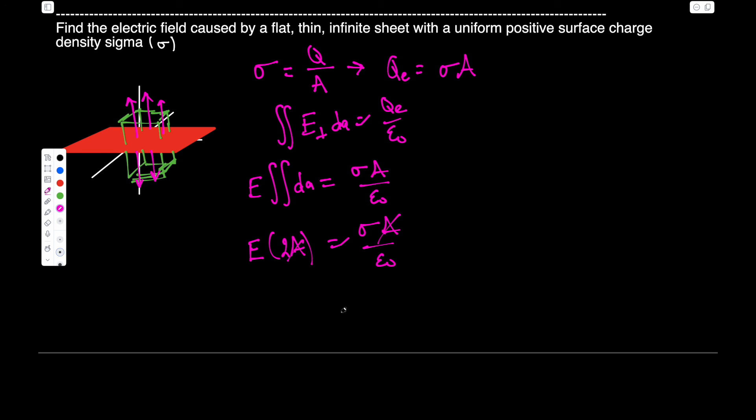And then we're going to get E equals sigma over 2 epsilon naught. And again, we want a vector. That's just going to be normal to the surface. So it's going to be going this way. Then again, if it's at the bottom, it's going to be negative n hat. So that's it.